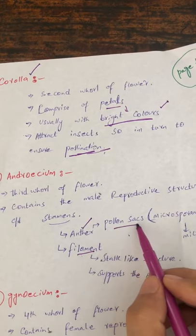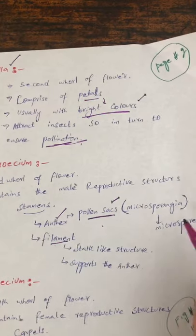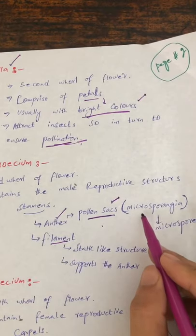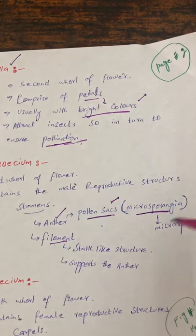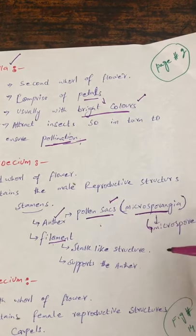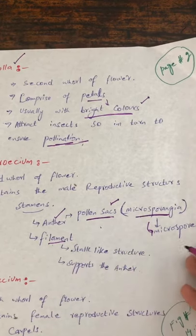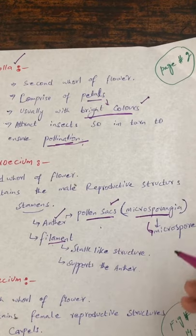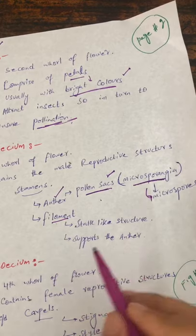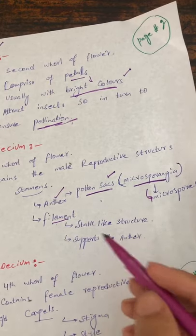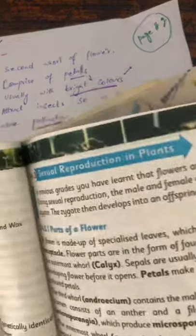The stamen has two parts: the anther and the filament. The anther contains pollen sacs, and inside these pollen sacs we have microsporangia. The microsporangia will in turn produce the microspores. The filament is a stalk-like structure that supports the anther. This will be easier to understand with the diagram.